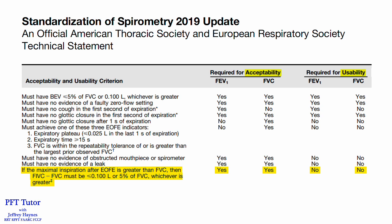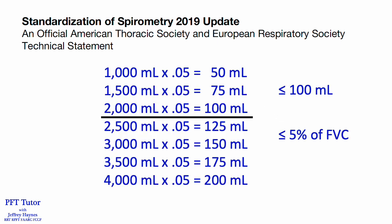If this is not achieved, the test may be deemed as usable, but not acceptable. In other words, if the forced vital capacity is 2 liters or less, the 100 mL criteria apply. But for forced vital capacities greater than 2 liters, the 5% rule applies. So as the forced vital capacity gets larger, the acceptable gap between inspired and expired volumes also increases. For example, if the forced vital capacity is 4 liters, a gap of up to 200 mLs is considered acceptable.